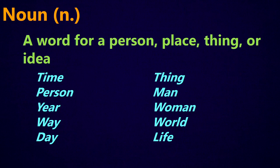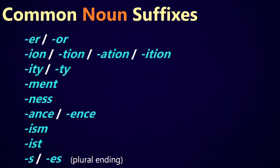The first group of content words are nouns. A noun is a word for a person, place, thing, or idea. Some common noun suffixes are the -er or -or ending (like teacher, doctor, or computer), the -ion, -tion, -ation, and -ition endings, the -ity or -ty ending, and the -ment ending, like government. Also the -ness ending, like kindness or sadness.